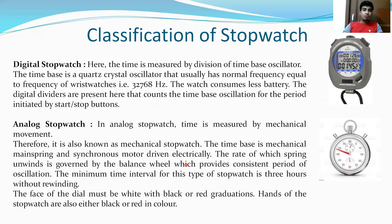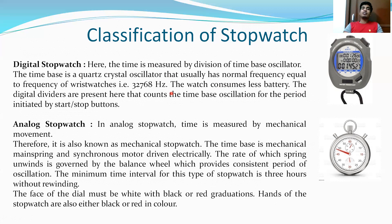Now let's look at the classification of stopwatches. There are two types of stopwatches: digital and analog. In digital stopwatches, time is measured by the division of a time-based oscillator. The time base is a quartz crystal oscillator that usually has a normal frequency equal to that of wristwatches — that is 32,768 Hz. The watch consumes less battery. Digital dividers count the time-based oscillations for the period initiated by the start or stop button, allowing for very precise micro-readings.